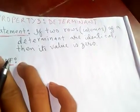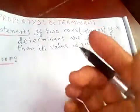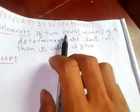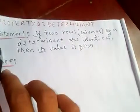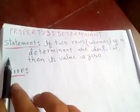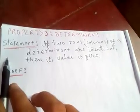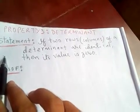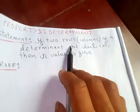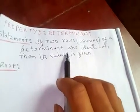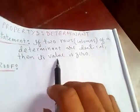Thanks for watching my video. Today I'm going to discuss property three of determinants. The statement of property three says that if two rows or columns of a determinant are identical, meaning the same, then